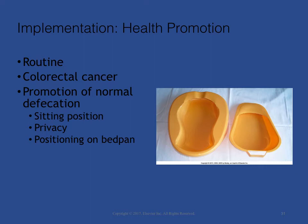Assist patients who have difficulty sitting due to muscular weakness and mobility problems. Elevated seats require patients to use less effort to sit or stand. Two types of bedpans are available for patients restricted to bed: the regular bedpan, made of plastic, has a curved smooth upper end and a sharper edged lower end about 5 cm (2 inches) deep; the smaller fracture pan, designed for patients with lower extremity fractures, has a shallow upper end about 2.5 cm (1 inch) deep.